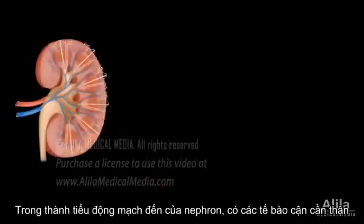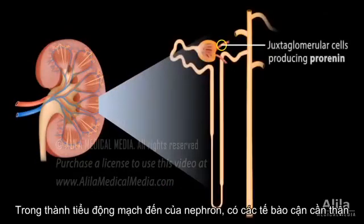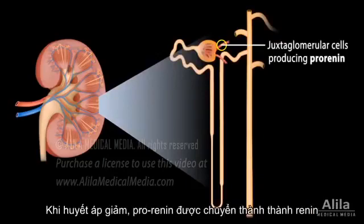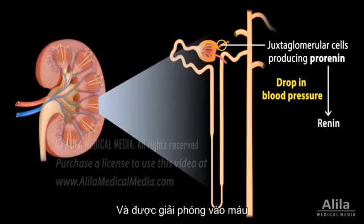In the kidneys, within the walls of afferent arterioles, there are specialized cells producing pro-renin called juxtaglomerular cells. Upon activation by a drop in blood pressure, pro-renin is cleaved to form renin, which is released into the blood.